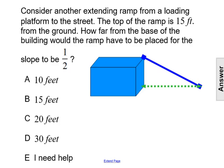Consider another extending ramp from a loading platform to the street. The top of the ramp is 15 feet from the ground. How far from the base of the building would the ramp have to be placed for the slope to be one half?